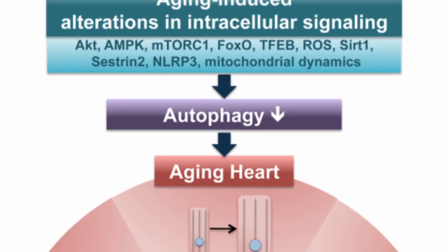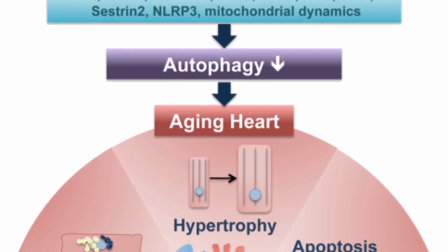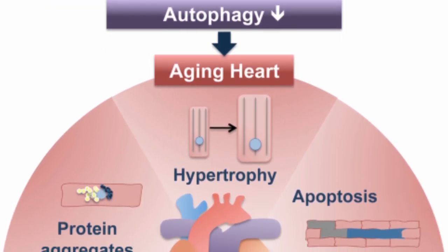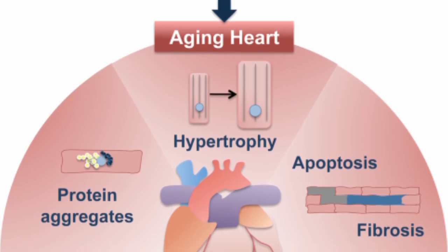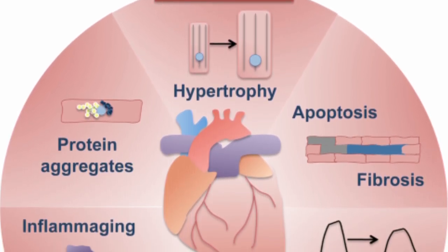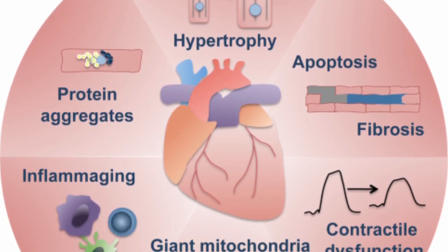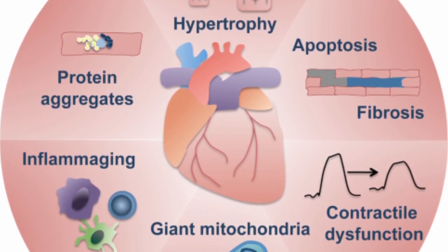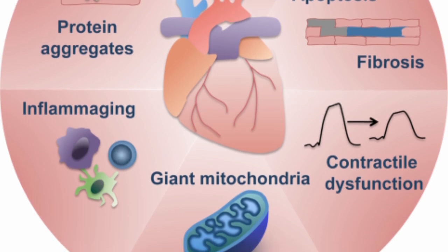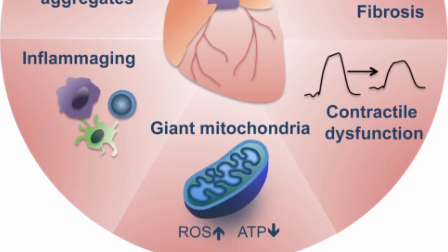With age, the efficiency of autophagy can decline, resulting in the accumulation of damaged cellular components and dysfunctional organelles. This accumulation can lead to cellular dysfunction and impair the body's ability to respond to stress, leading to the accumulation of protein aggregates, damaged mitochondria and other cellular debris.